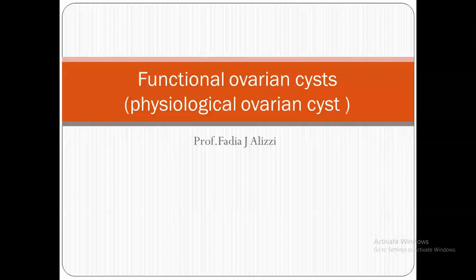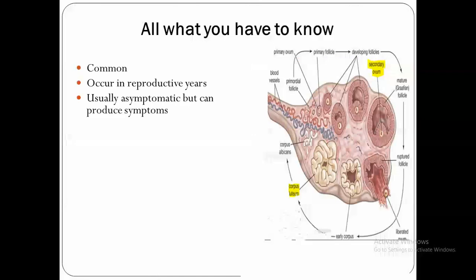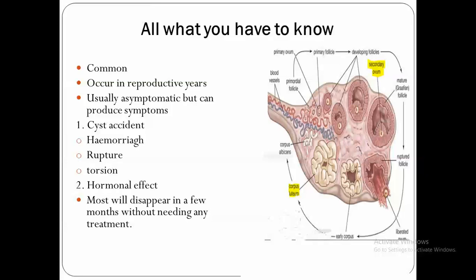Functional ovarian cysts, or what we call physiological ovarian cysts. All you have to know about them: they are common, occur in reproductive years, usually asymptomatic but can produce symptoms because of cyst accidents such as hemorrhage, rupture, torsion, or hormonal effects. That is why they are called functional ovarian cysts. Most will disappear in a few months without needing any treatment.